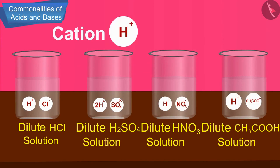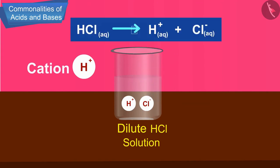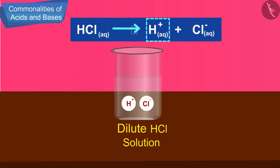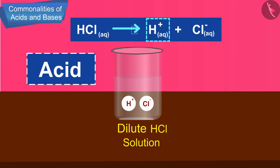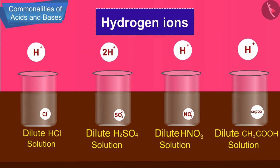The aqueous solution of an acid conducts electricity due to the presence of charged particles called ions. All acids contain hydrogen ions. When an acid is dissolved in water, it separates out as positively charged hydrogen ions and enters the solution as H⁺ ions. So we can say that an acid is a substance which dissociates on dissolving in water to produce hydrogen ions or H⁺ ions.